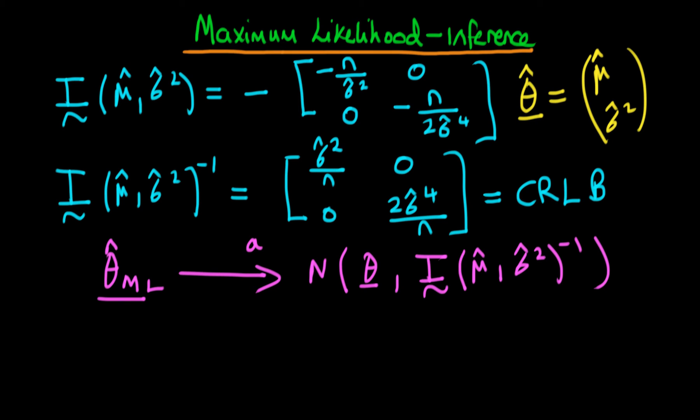Because of the fact that the off-diagonal elements are zero in this model, essentially that means that the maximum likelihood estimators for the mean and the variance actually have no covariance and because of that we can actually consider the terms in isolation.